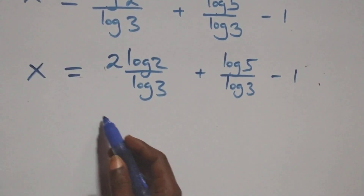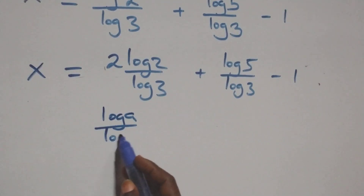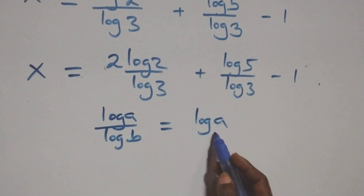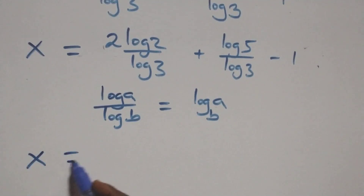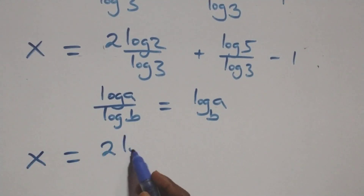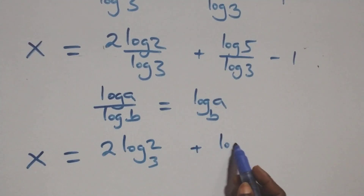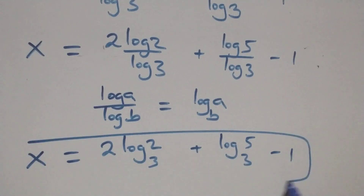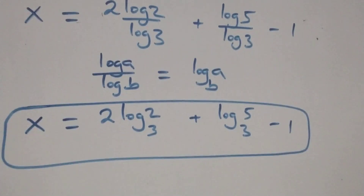We apply the change of base rule: log a over log b is the same as log a to base b. So x equals to 2 log 2 base 3 plus log 5 base 3 minus 1. That is the value of x: x equals to 2 log₃2 plus log₃5 minus 1.